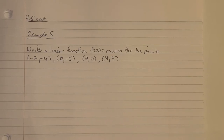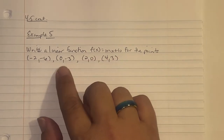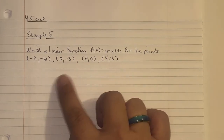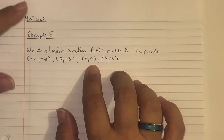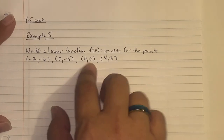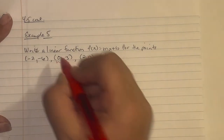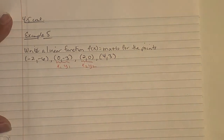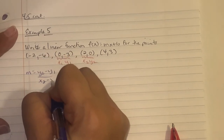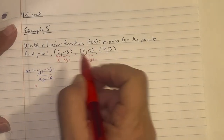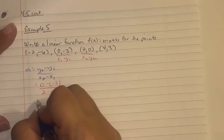Example 5: Write a linear function f(x) equals mx plus b for the points (-2, -6), (0, -3), (2, 0), and (4, 3). They gave us four ordered points; we only need two. Since no slope is given, pick two points and use the slope formula. Using (2, 0) and (4, 3) as (x₁, y₁) and (x₂, y₂): slope equals (3 minus 0) over (4 minus 2) equals 3/2.